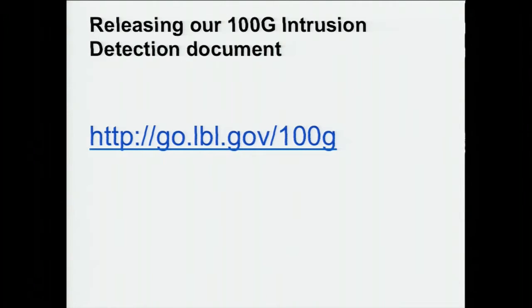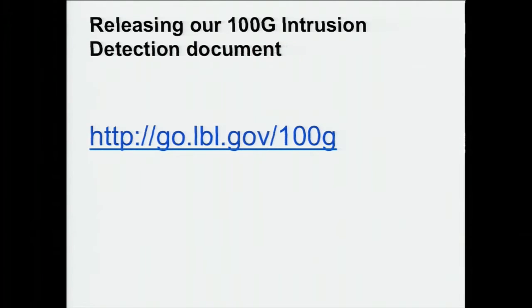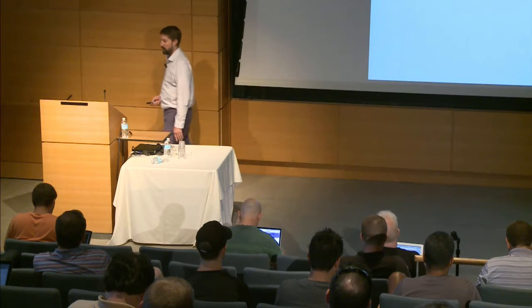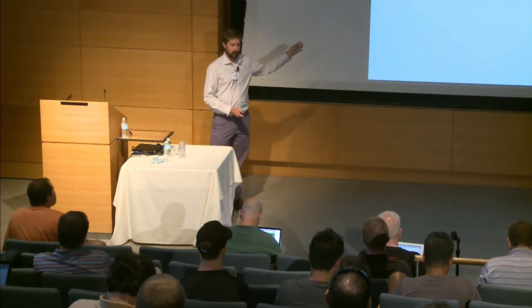We are excited to announce we're releasing our technical paper about our 100 Gigabit intrusion detection system built around Bro and an Arista set of devices. We presented this at Bro for Pros and had a lot of help from people to review and write it over many months. It is now live and anyone can download it. It's a technical how-to of our design decisions, exact configurations, performance metrics, and how it's running in the real world — please download it and share your thoughts.